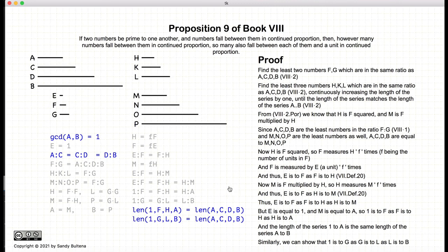And thus, through a demonstrative proof, we have shown that the length of a, c, d, b is equal to the length of 1 to a, which is the length of 1 to b. And that's it.